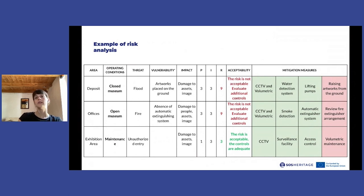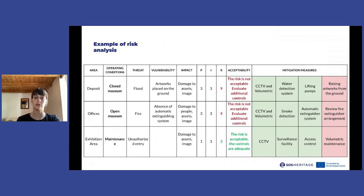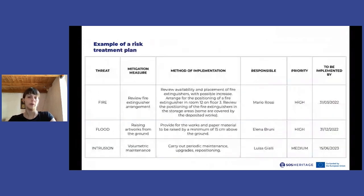In the right section of the risk analysis you can see all the mitigation measures identified for that particular risk. In green we have the measures already put in place inside the museum, while in red you can see the mitigation measures that have to be implemented as soon as possible. This gives you a visual representation of the mitigation measures that need immediate action, and this last section can be used later on to draw up a risk treatment plan.